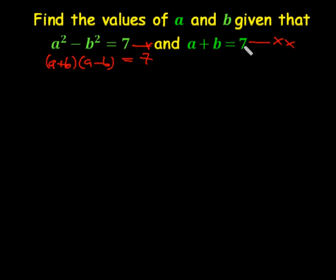But from equation star 2, a plus b is equal to 7. Therefore, 7 into a minus b is equal to 7. We divide both sides by 7.